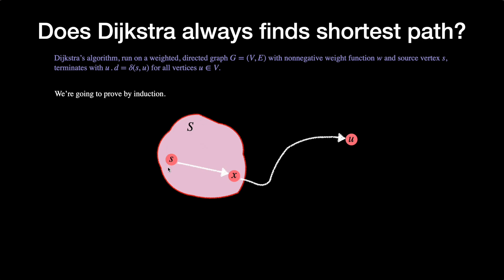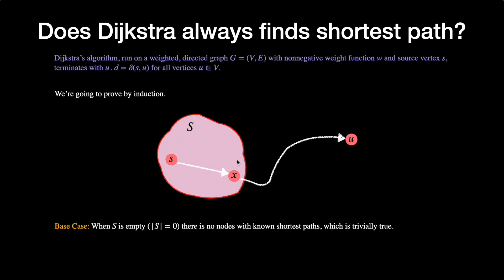We prove this by induction. Consider set S containing the source vertex and all vertices for which edges have been relaxed — for every u in S, u.d holds the shortest path. Base case: when S is empty (|S| = 0), there are no vertices, so the shortest path is zero, which is trivially true. When S has only one vertex (the source), there are no edges and the shortest path is zero, which is also true.